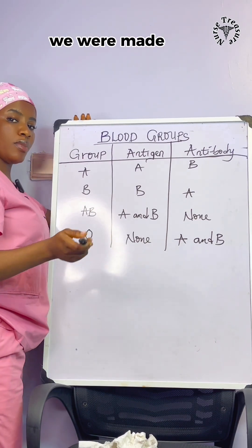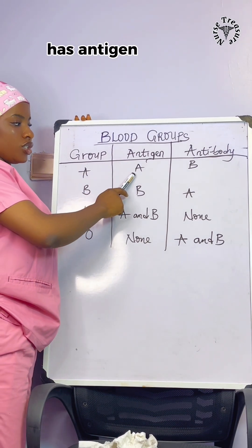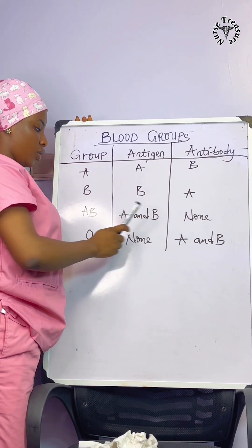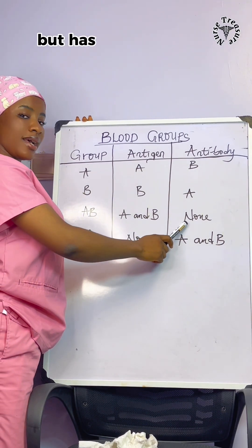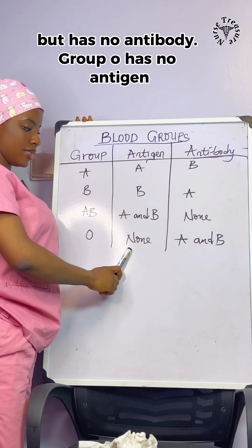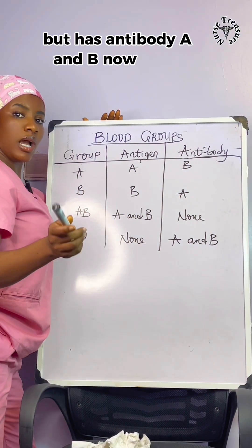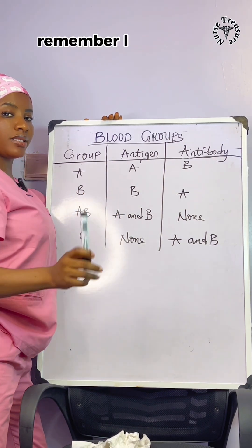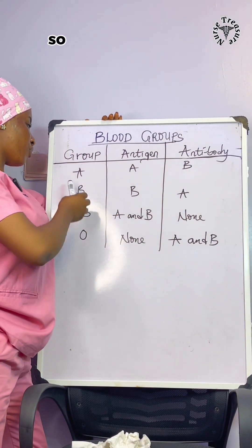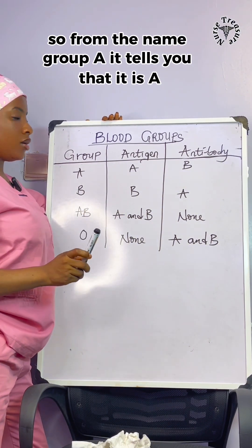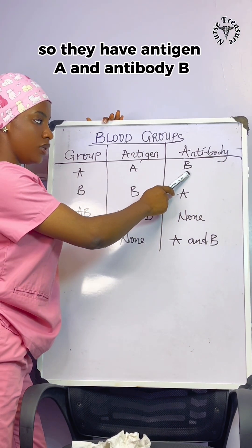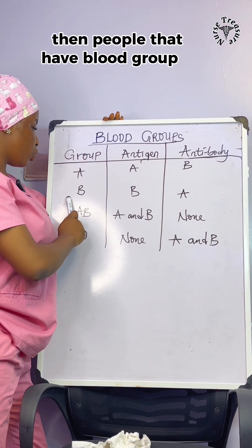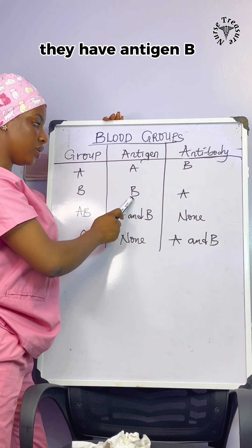From this illustration, blood group A has antigen A and antibody B. Group B has antigen B and antibody A. Group AB has antigen A and B but has no antibody. Group O has no antigen but has antibody A and B. So people with blood group A have antigen A and antibody B, meaning they reject blood from blood group B.